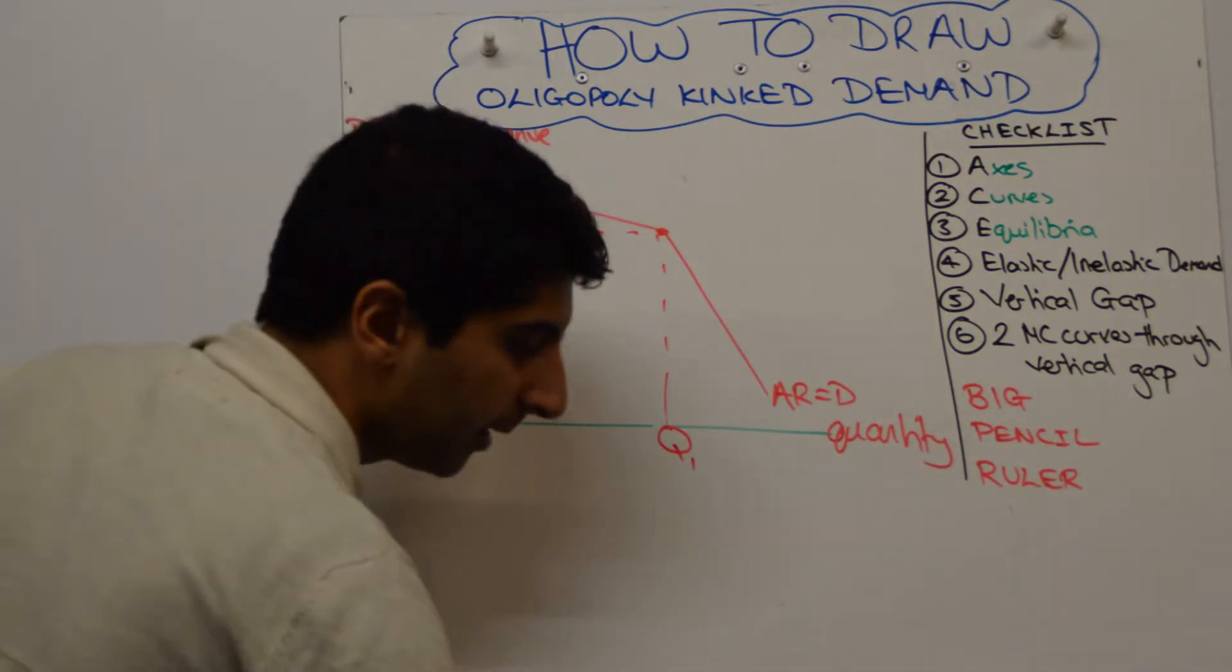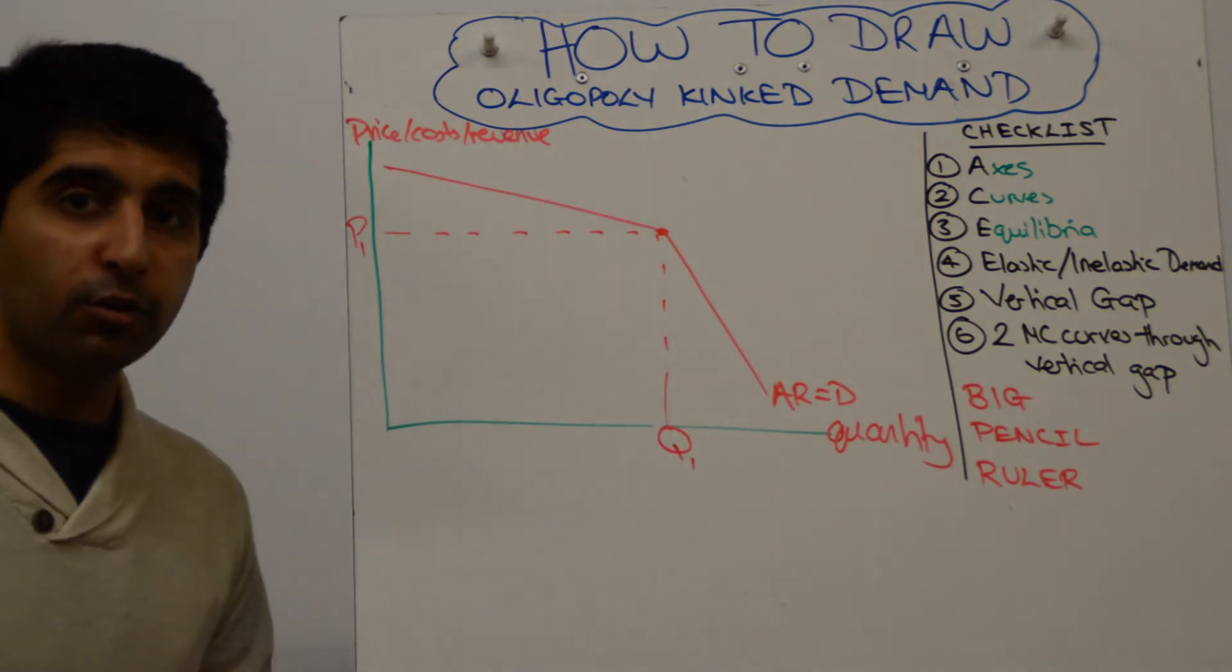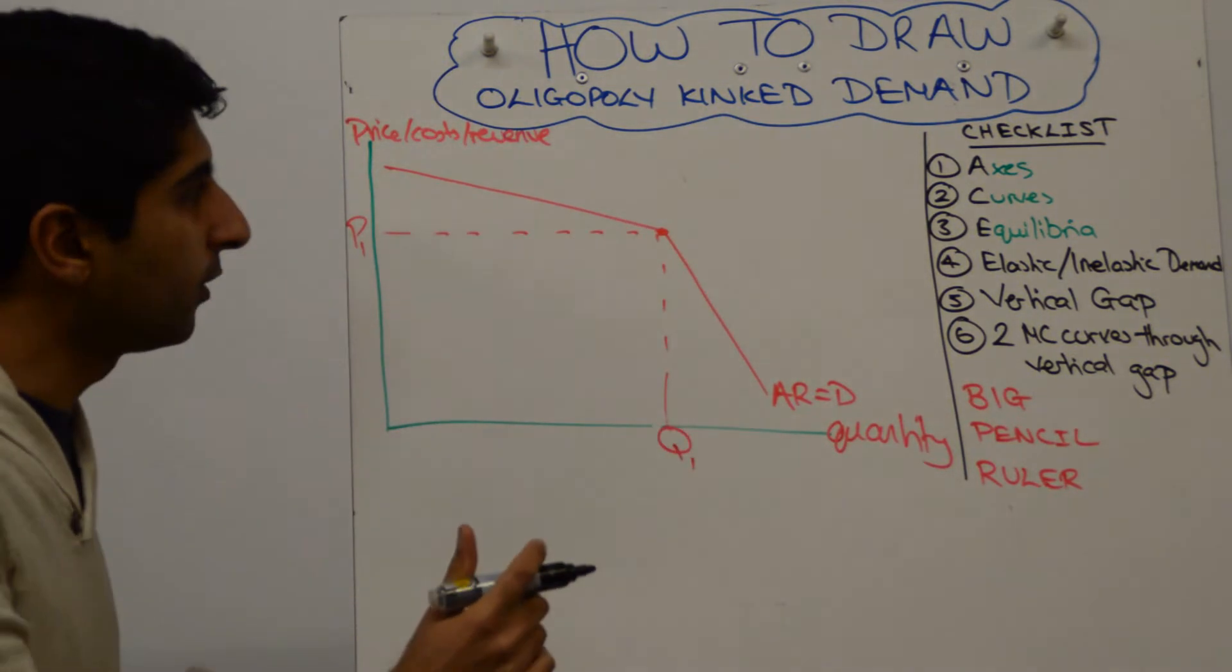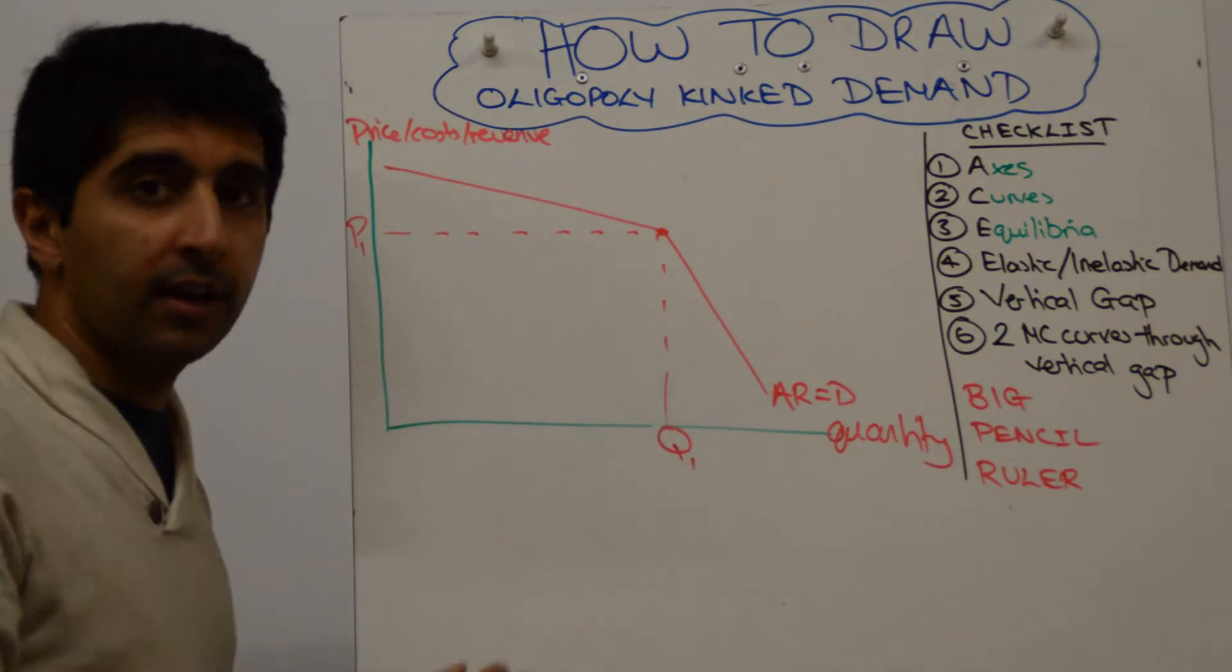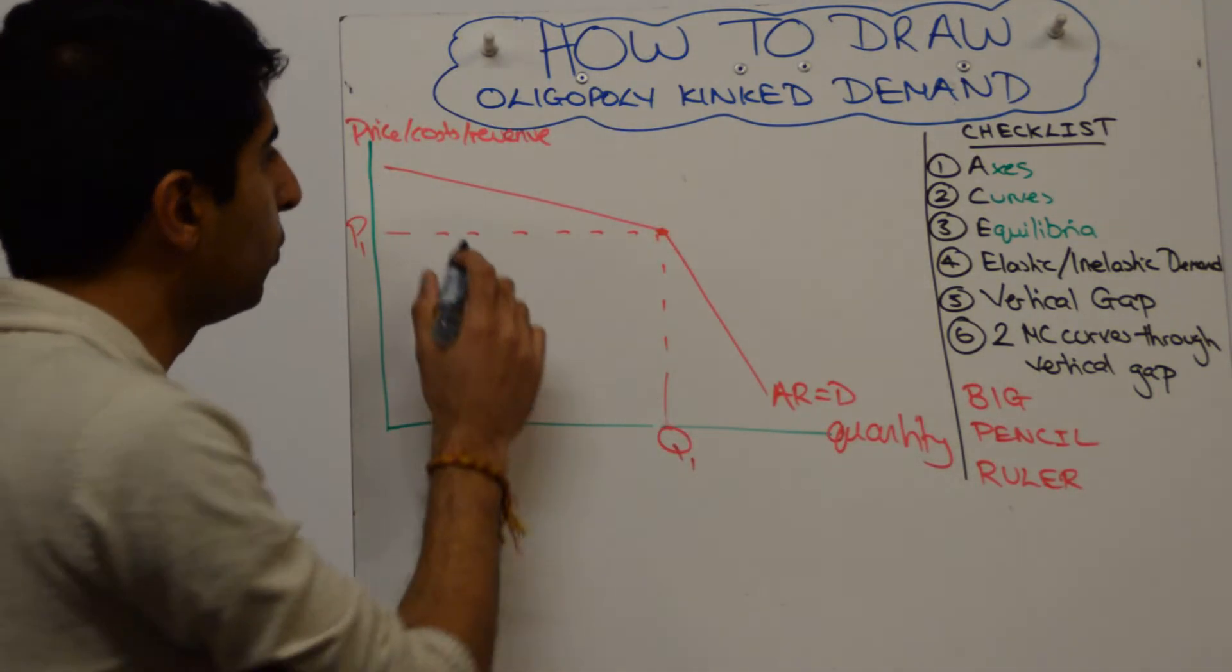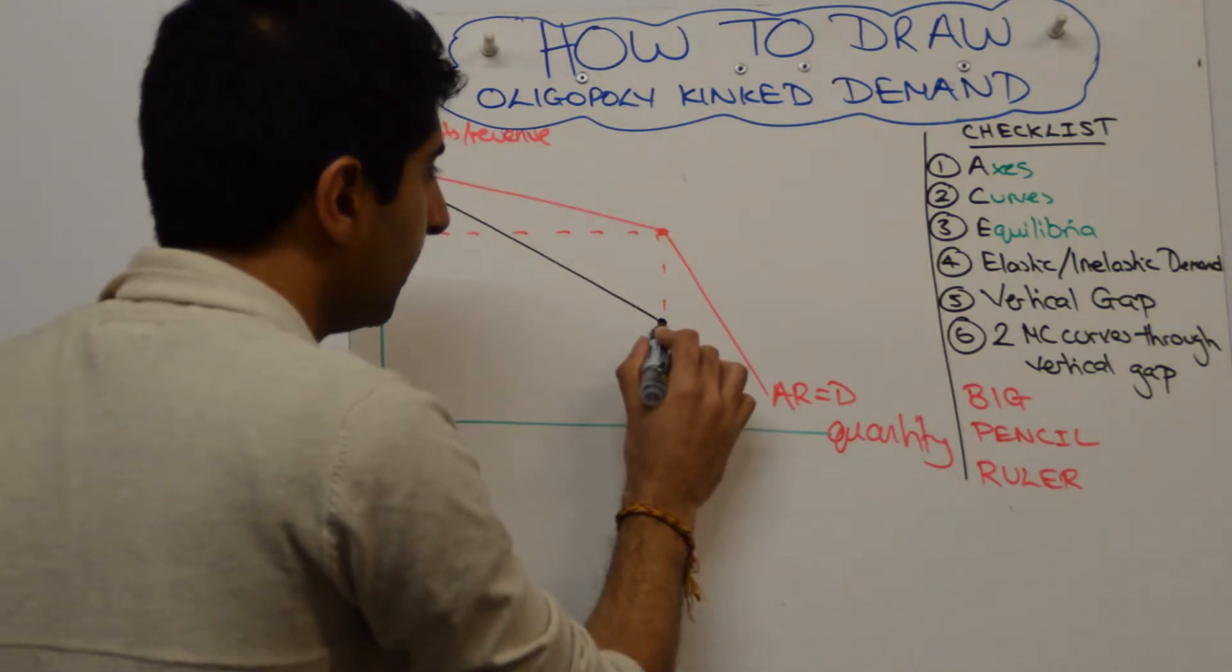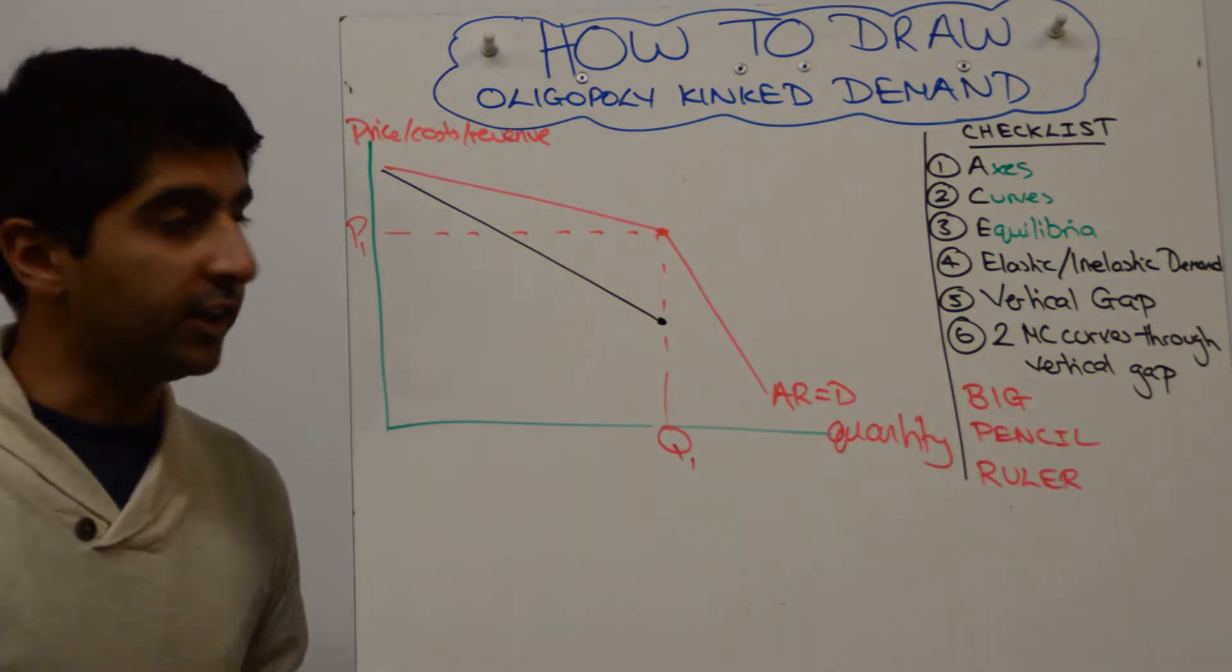Next, and I'll do it in a different color, we have to draw our marginal revenue curve which is going to be twice as steep as both of these two curves. So the way to do it, twice as steep for the first section of the demand curve up until Q1. Let's do that. Alright, so twice as steep and stop when you hit the quantity Q1.